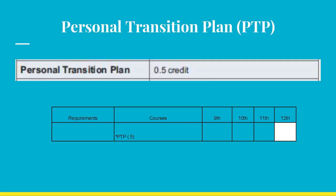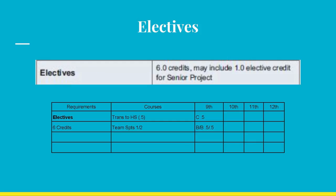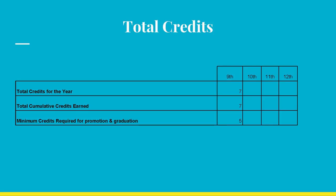Although you do not receive credit for your PTP until your junior year, it is strongly advised that you make an effort to keep up and complete necessary items throughout the first two years of your high school career. All other courses that do not fall under any category above should be listed under electives — for example, Transitions to High School and Team Sports 1 and 2. At the end of the year, this student earns seven credits for the ninth grade year cumulatively. Remember, a student needs to earn at least five credits to be promoted to 10th grade, 11 credits for 11th grade, and 17 credits for 12th grade.